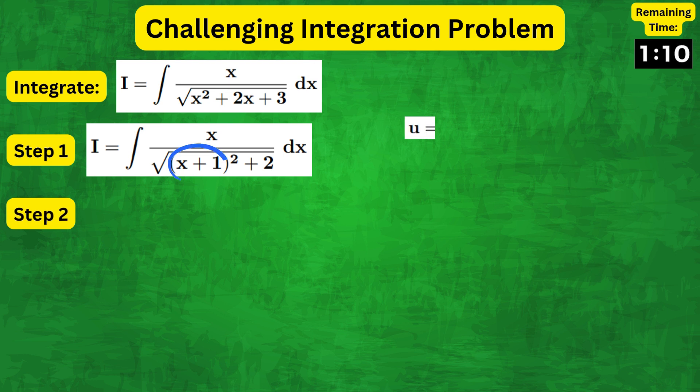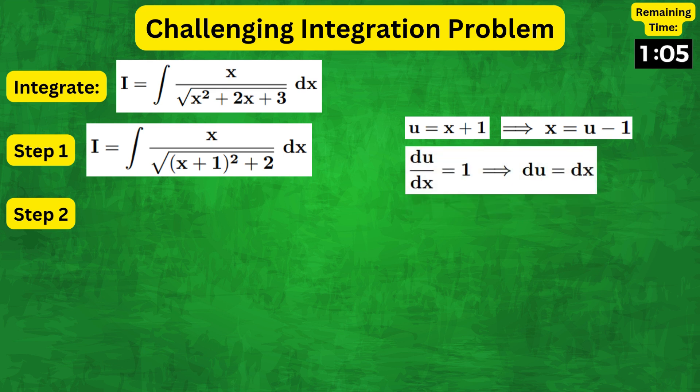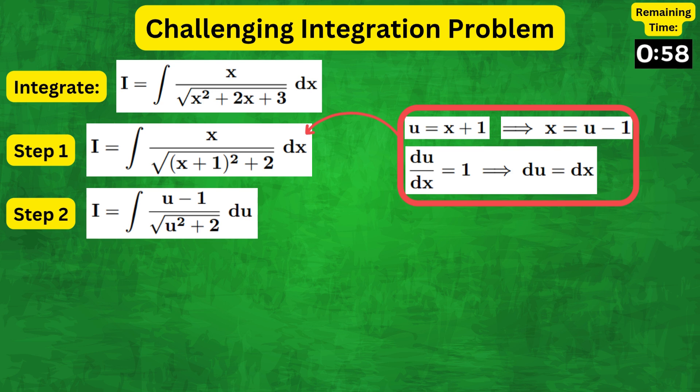We can use the substitution u equals x plus 1, so that du by dx equals 1, and therefore the integral becomes u minus 1 over square root of u squared plus 2.